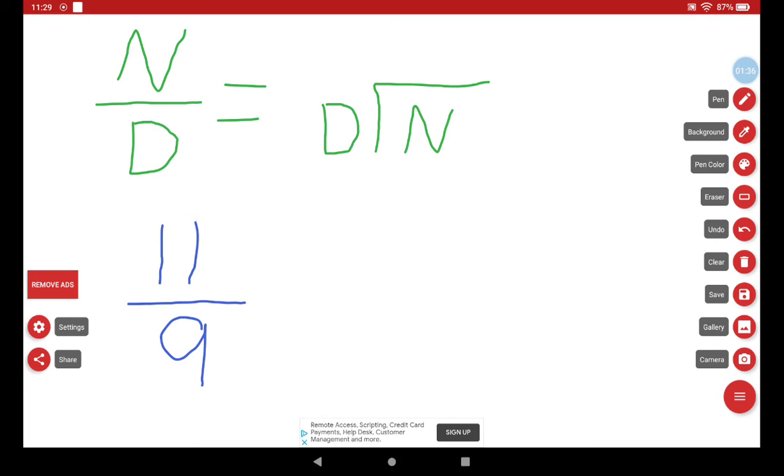My quotient will be my whole number, and my remainder will be my new numerator.